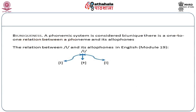One guiding principle of phonemic analysis was the principle of bi-uniqueness. What the principle says is that once a phoneme is related to an allophone, you can predict what allophone the phoneme has, and from the allophone you can predict what phoneme it relates to. That is, there is a one-to-one relationship between the phoneme and an allophone. Thus the allophones of the lateral /l/ that we looked at in an earlier module are represented in the following way.